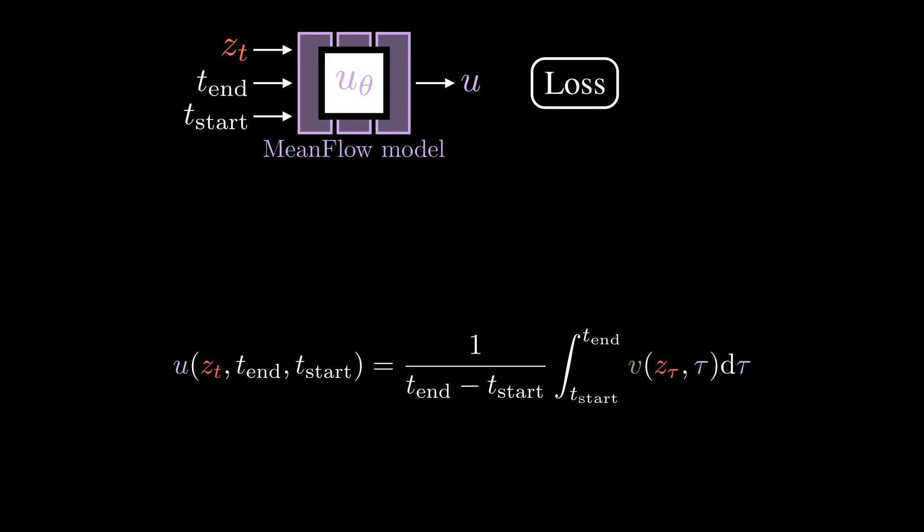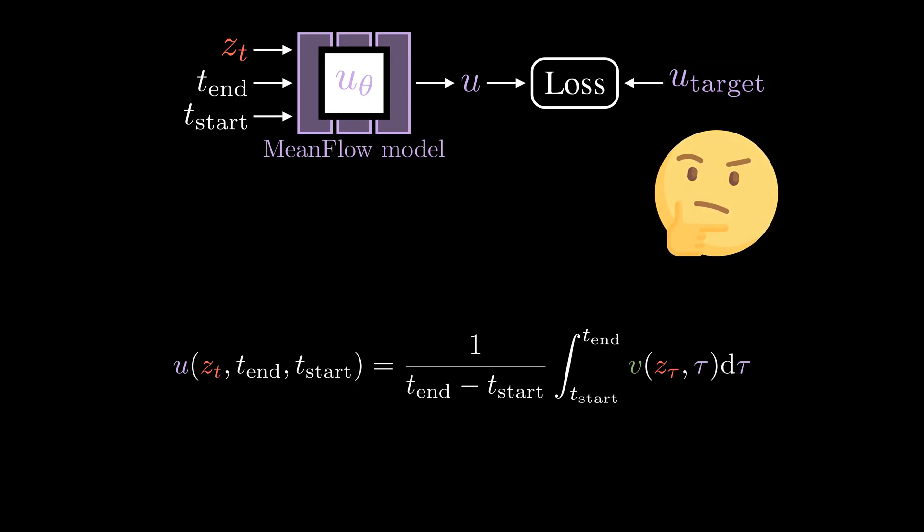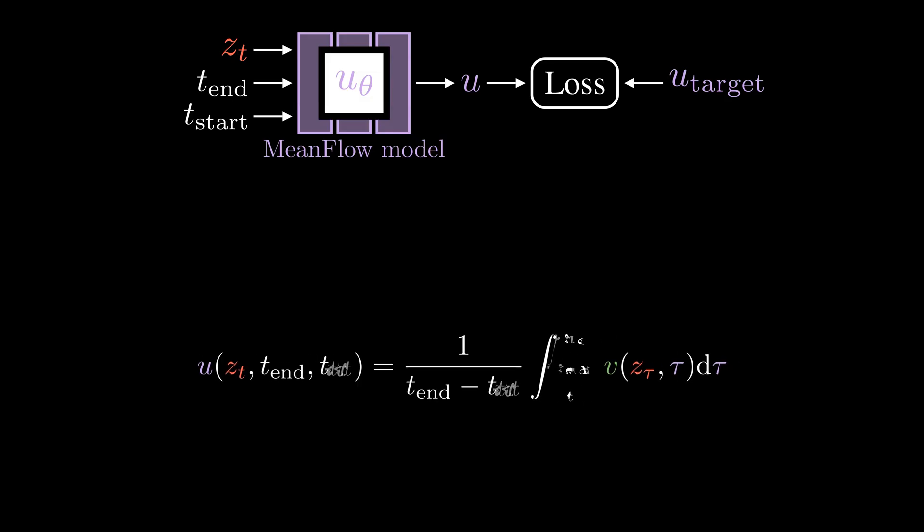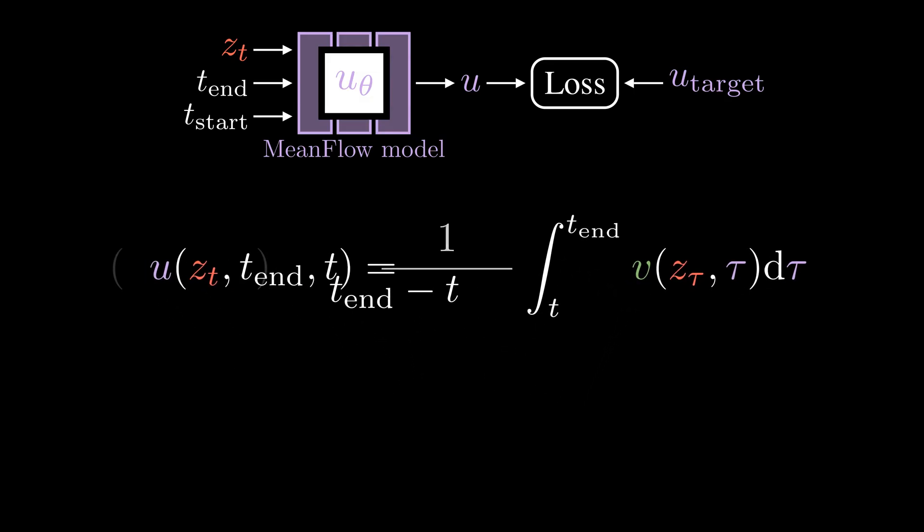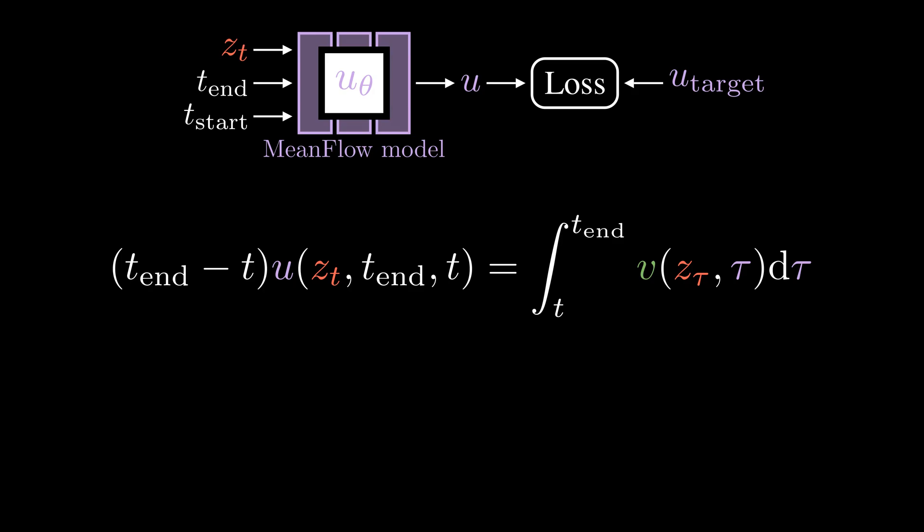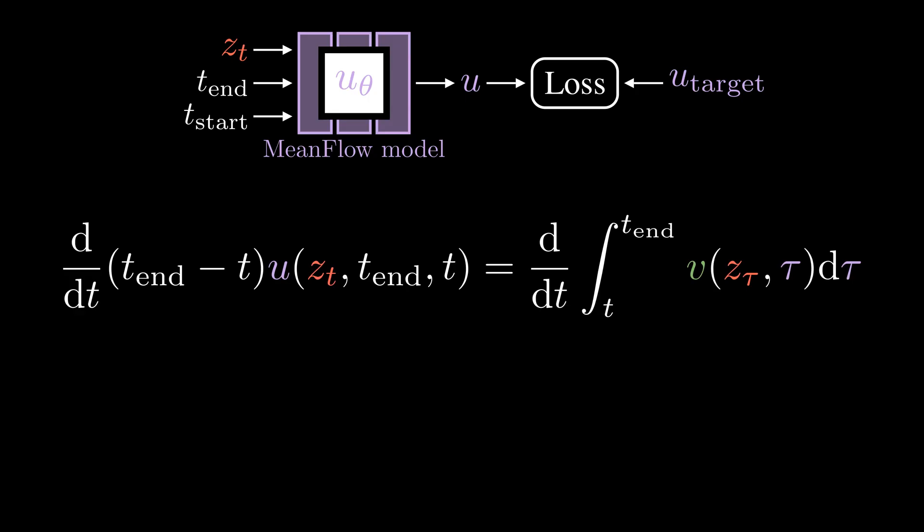But the million dollar question is, how do we train this mean flow model? To do so, we need to derive the ground truth vector U_target. Let's first simplify the notation by replacing t_start with time t. We can move the time interval from t to t_end to the right hand side. It's quite challenging to work with an integral. Therefore, we differentiate both sides with respect to time t.